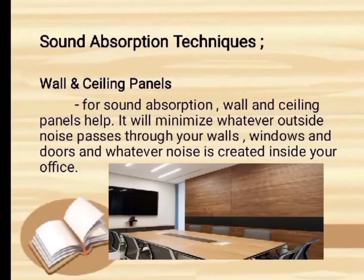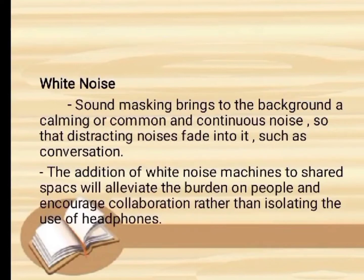Here are sound absorption techniques. The first is wall and ceiling panels. For sound absorption, wall and ceiling panels help. They minimize whatever outside noise passes through your walls, windows, and doors, and whatever noise is created inside your office. Here is an example of wall and ceiling panels. Next is white noise. Sound masking brings to the background a calming, continuous noise so that distracting noises, such as conversation, fade into it.